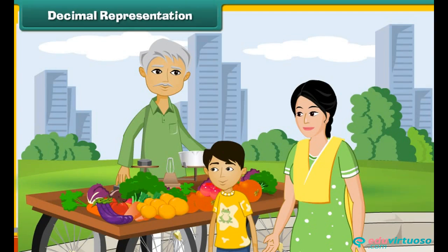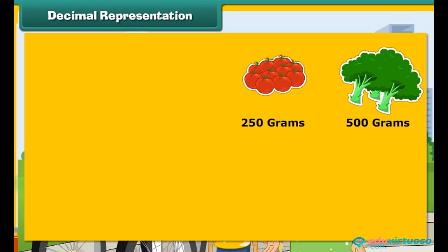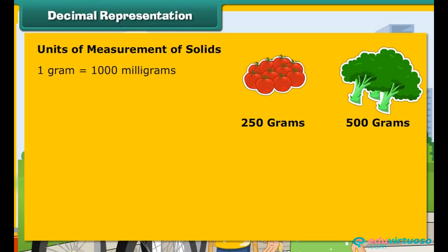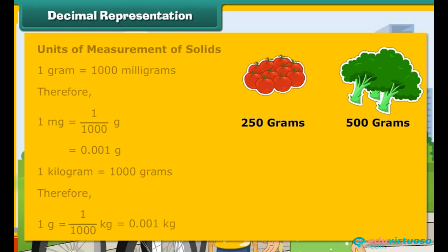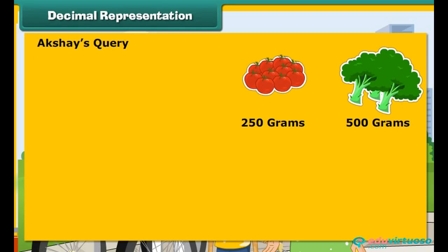Akshay accompanied his mother to the vegetable market, where she bought 250 grams and 500 grams of different vegetables. He wanted to express the quantities as kilograms. 1 gram equals 1000 milligrams, so 1 mg equals 1 by 1000 gram, which is 0.001 gram. 1 kilogram equals 1000 grams, so 1 gram equals 1 by 1000 kg, which is 0.001 kg. We now express the vegetables Akshay's mother purchased in kilograms.